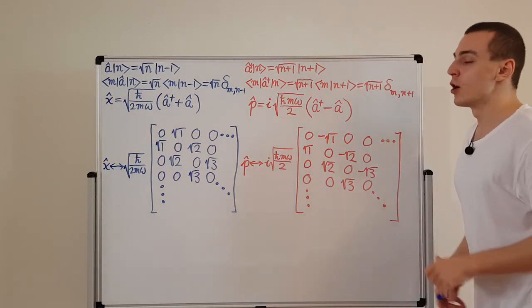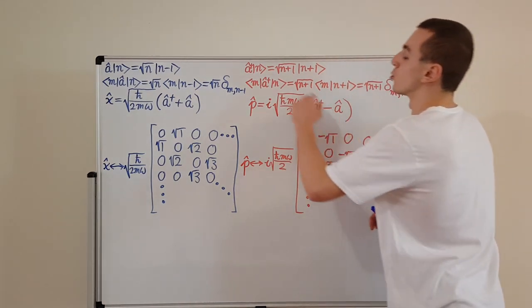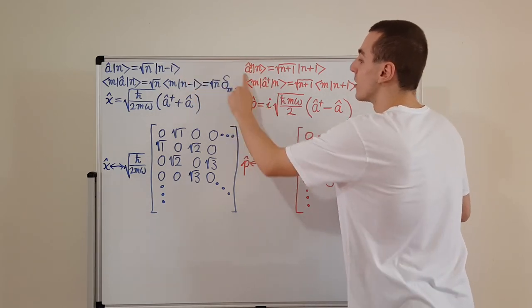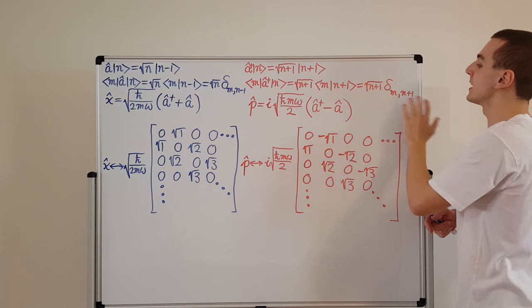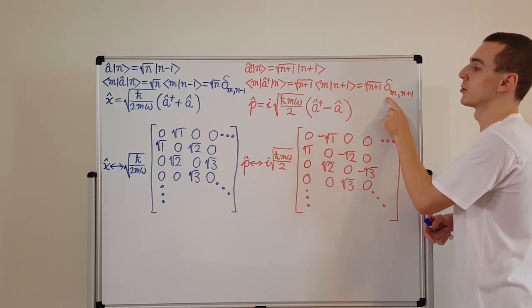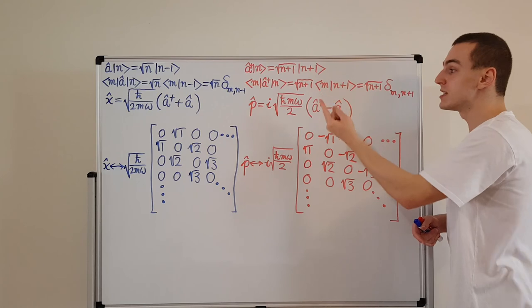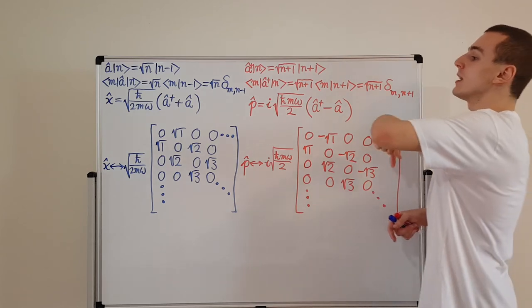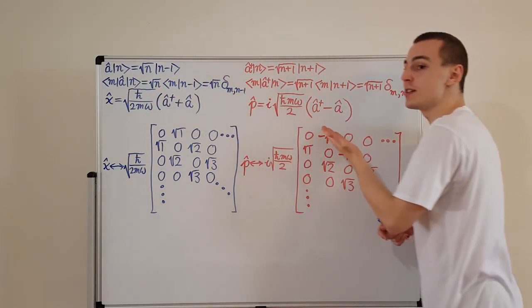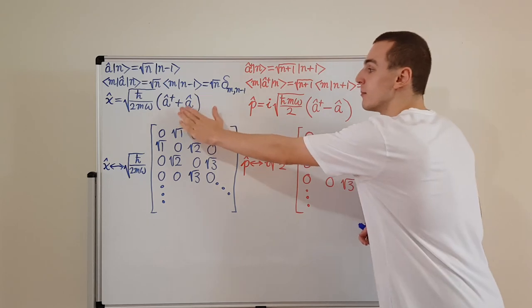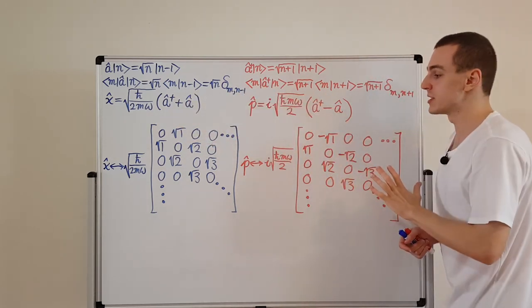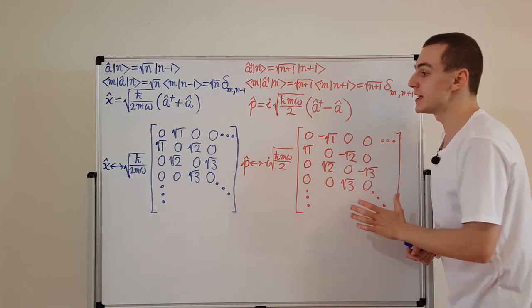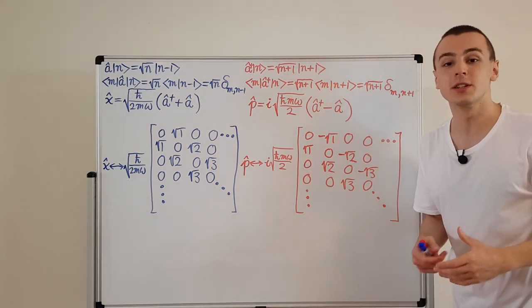As a summary: we used the relationships for the raising and lowering operators and found their matrix representations written in condensed Kronecker delta notation — that was done in the previous video. Then we expressed position and momentum in terms of these ladder operators, and took the sum and difference of those two matrices to get the position and momentum representations. Make sure you check out the other videos in the quantum mechanics playlist.